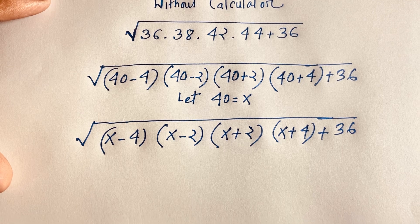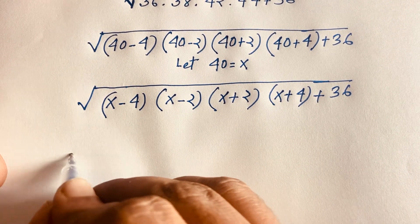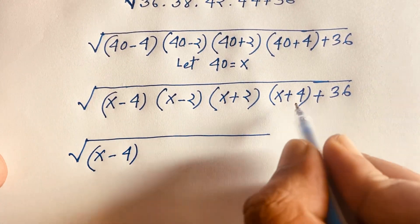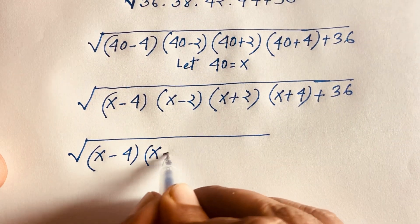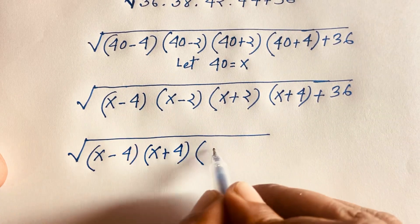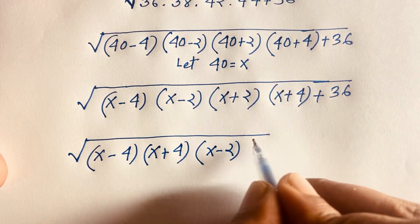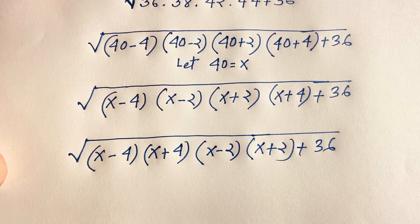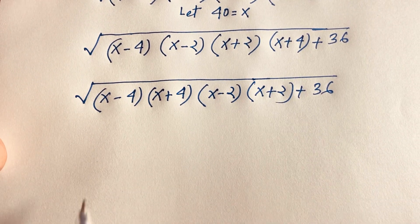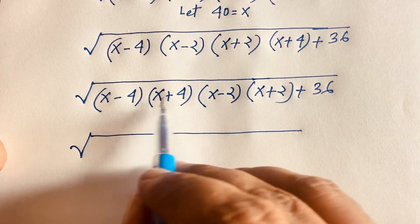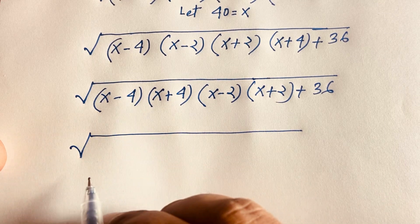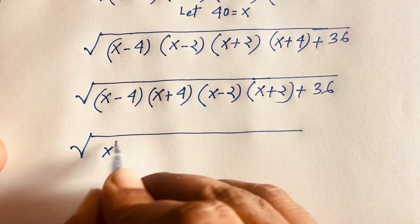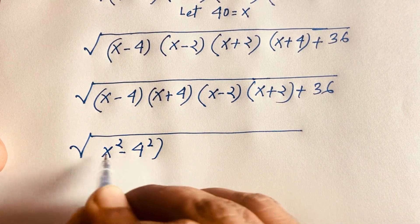At this moment you can see we can group (x minus 4)(x plus 4) and (x minus 2)(x plus 2). Applying the rule (a plus b)(a minus b) equals a squared minus b squared, we get (x squared minus 4 squared) times (x squared minus 2 squared), plus 36.